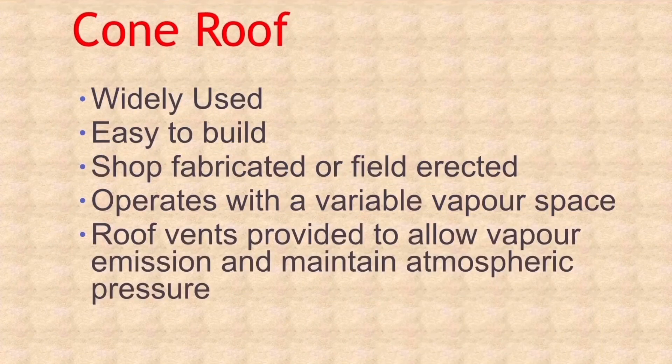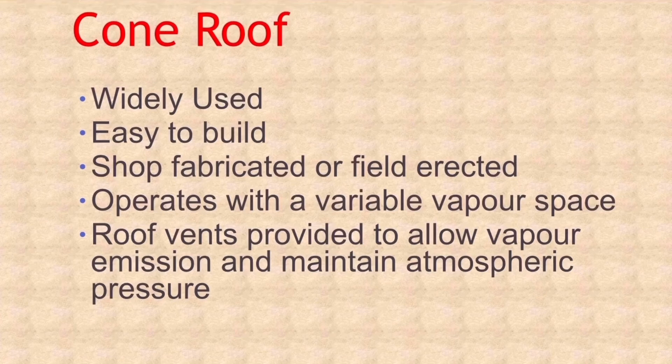Cone roof tanks are cylindrical shells with a vertical axis of symmetry. The bottom is usually flat and the top is made in the form of a shallow cone. These are the most widely used tanks for storage of relatively large quantities of fluid because they are economical to build and a number of contractors are capable of building them. They can be shop fabricated in small sizes but are most often field erected. Cone roof tanks typically have roof rafters and support columns except in very small diameter tanks.